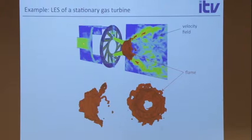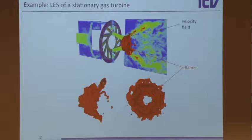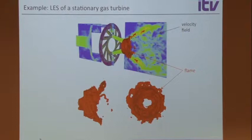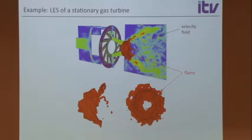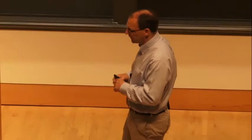You have fuel-air mixture coming from the left, and then there's a swirler, so you get a swirling flow and then a flame. One of the things you see in LES is you get all these dynamics — you resolve some of the dynamics of the flow and also of the flame.